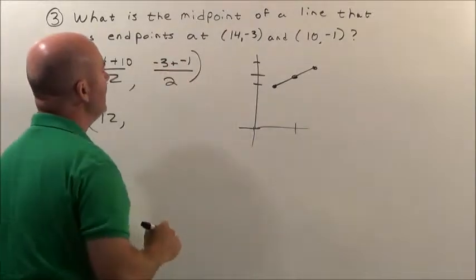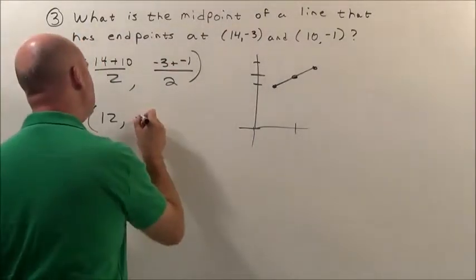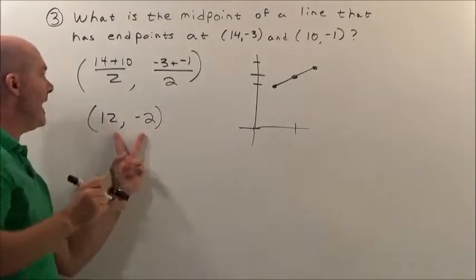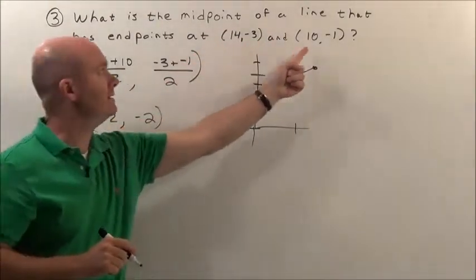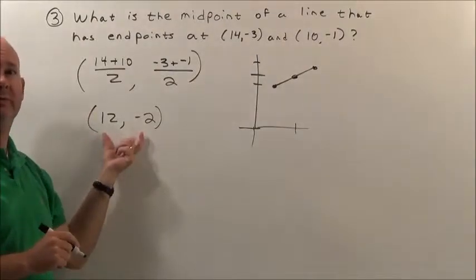Negative three plus negative one is negative four. Negative four divided by two is negative two. So, that will be the midpoint if the endpoints are this and that. There's our midpoint for problem three: (12, -2).